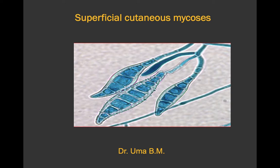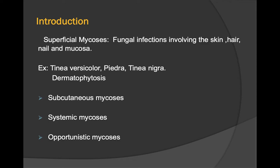Superficial cutaneous mycosis are fungal infections involving skin, hair, nail, and mucosa. Examples include Piedra, tinea nigra, tinea versicolor, and dermatophytosis. Other types of fungal infections are subcutaneous mycosis, systemic mycosis, and opportunistic mycosis.